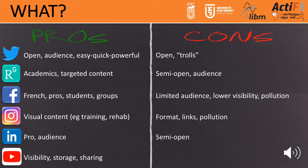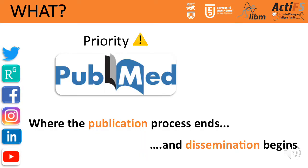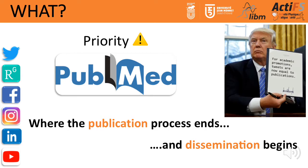Now let's go to strategy. The priority for academics is PubMed. The first thing you need to do is publish scientific content. PubMed is where the publication process ends but also where dissemination starts. There was a joke suggesting that tweets equal publications — unfortunately that is not true. Be very careful: your playing ground is not Twitter, your playing ground is PubMed and official publications.